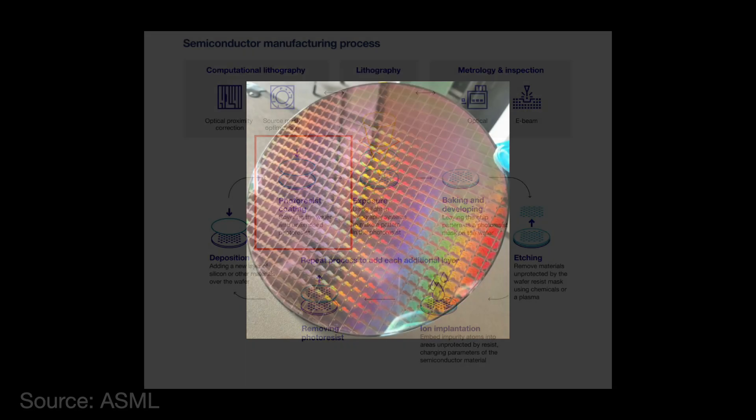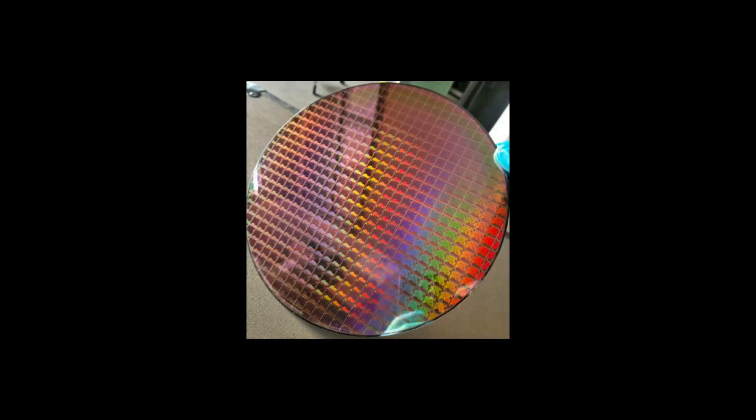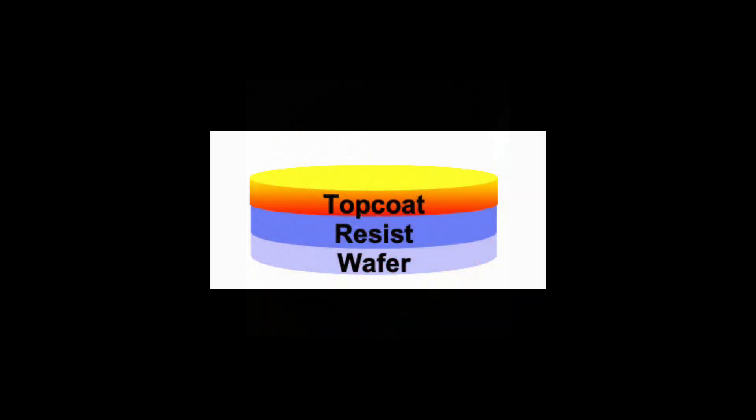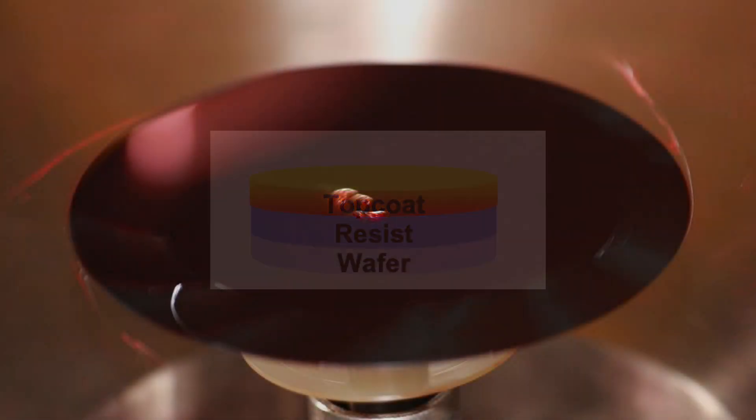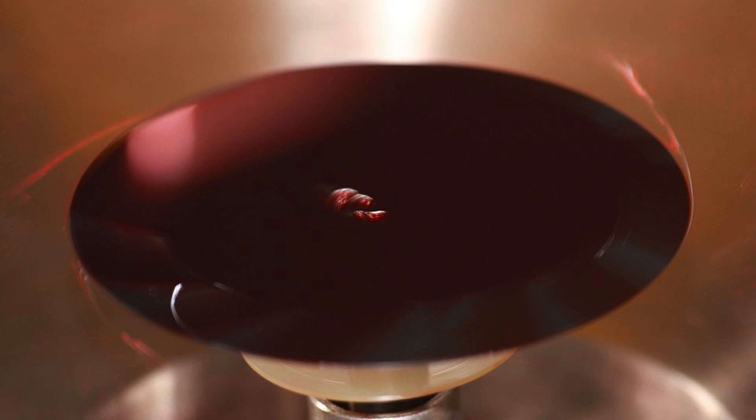In order to prevent the resist from washing off and contaminating the lens, foundries developed and applied a protective layer of what is called top coats to the wafer. This works, but it also adds more complexity to the semiconductor manufacturing process, creating more opportunities for errors and defects. The industry has generally asked not to do this.